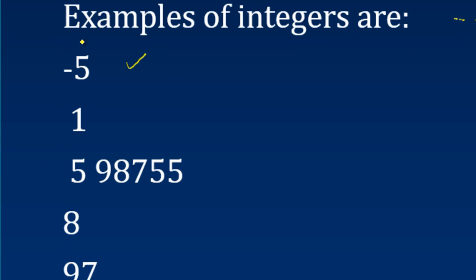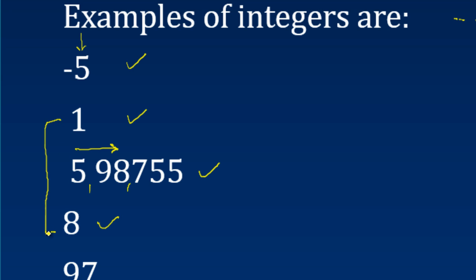Examples of integers: minus five is a negative integer. One is a positive integer. Something as big as a six-digit number — five lakh ninety-eight thousand seven hundred and fifty-five, or in some places five hundred ninety-eight thousand seven hundred and fifty-five — is also an integer.